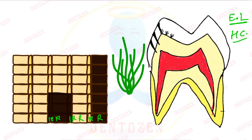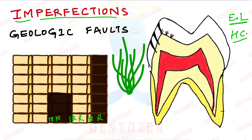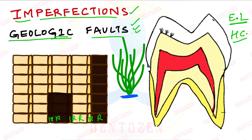So what are enamel tufts? They are imperfections — we can say they are likened to geologic faults. Just as when rocks form there can be geologic faults, similarly there can be faults during the formation of enamel. So that is what enamel tufts are. Now you have understood what they are, but why do these defects appear like tufts of grass? Let's understand why this appearance is there.